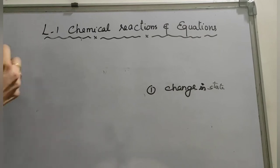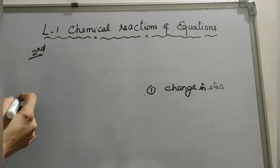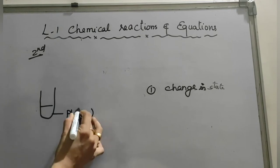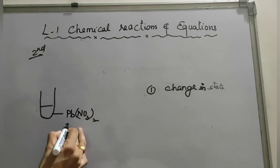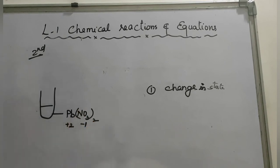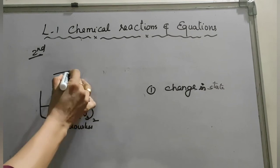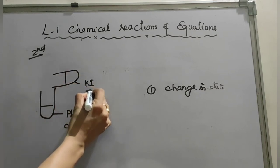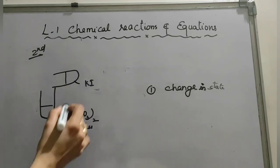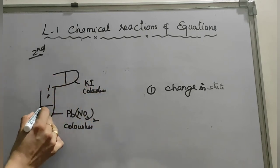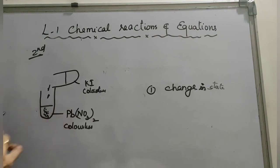Let's perform the second activity. Take lead nitrate solution in a test tube. Lead nitrate is Pb(NO₃)₂ — because lead shows plus two ionic state and nitrate is minus one, cross-multiplied gives Pb(NO₃)₂. Note that lead nitrate is a colorless solution. Add potassium iodide solution, which is KI — potassium is plus one, iodide is minus one — and potassium iodide is also a colorless solution.